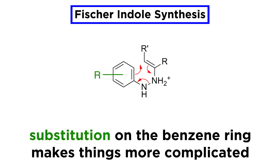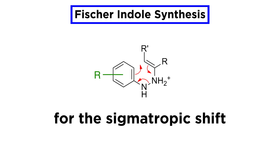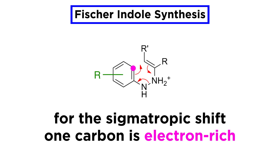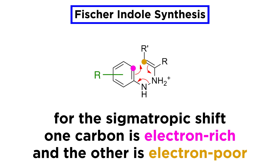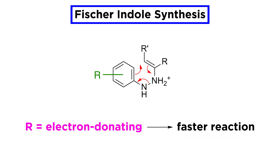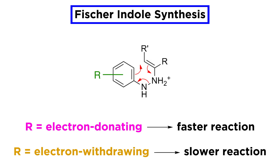Now the situation is more complex when the ring is substituted. We can look at the 3,3-shift as a reaction in which the ortho-carbon of the electron-rich aniline attacks the electron-poor alkene. Thus, the more electron-rich the aniline, the faster the reaction. Therefore, if electron-donating substituents are present on the ring, the reaction is accelerated. If electron-withdrawing substituents are present, the reaction is hindered, and in extreme cases it just does not occur.